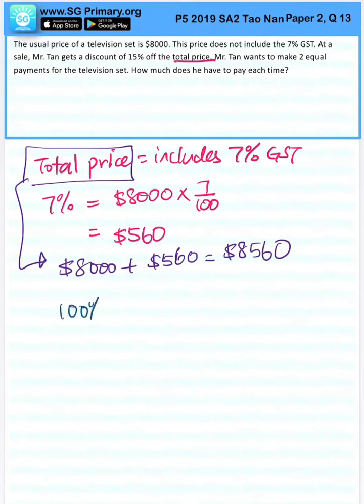So 100% minus 15% will give us 85%. So this is the discounted rate.